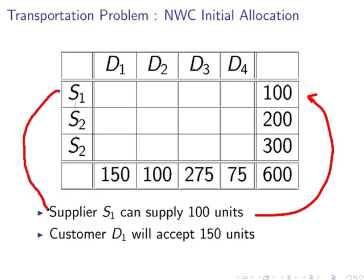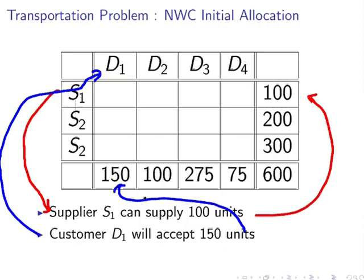Then we have customer D1. For example, customer D1 can accept 150 units from any supplier or any combination of those three suppliers. So that is what the row totals and column totals are about. Just as a remark, the total amount supplied is equal to the total amount demanded by customers, and that is what is meant by a balanced tableau.